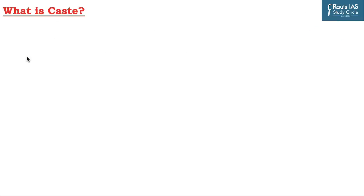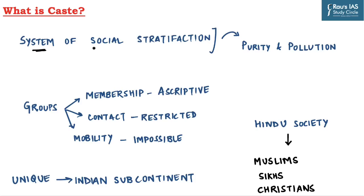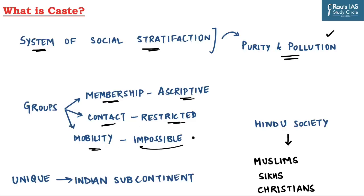Let us try to understand what caste is. This term appears in everyday newspapers and articles, so you should have a clear understanding of what caste is and its basic features. Caste is a system of social stratification based on the principles of purity and pollution. In this system, groups are hierarchically arranged where membership is ascriptive, contact is restricted, and mobility is theoretically impossible.